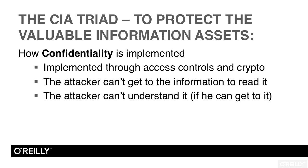Another form of access control is permissions — for example, on the folder or the actual file that lives on the server, or perhaps on the database. If the permissions say this group of users has read-only permission, then those people are authorized to read the information. Permissions also include something called a default deny, which says if you're not on the approved list, you're on the denied list.